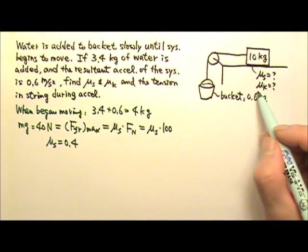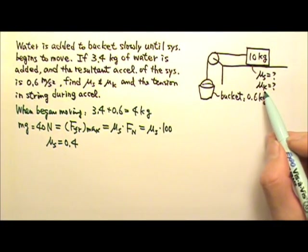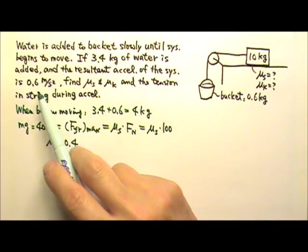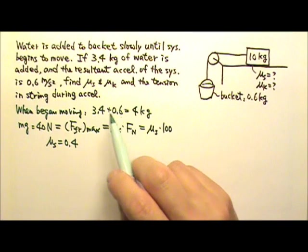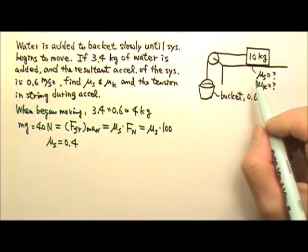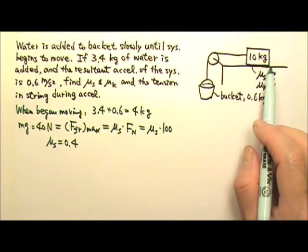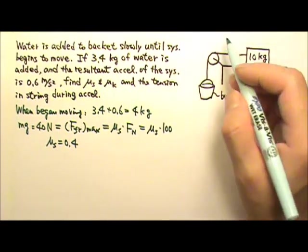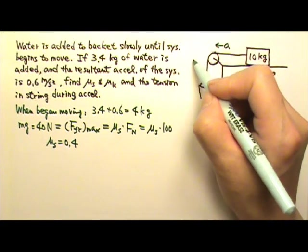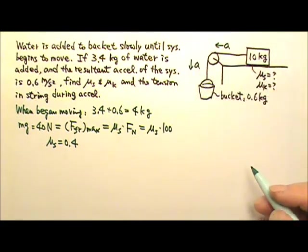Now for the μk, that has to do with the sliding motion. So we'll have to look at the sliding motion part. If we follow the problem solving procedures, first the direction of acceleration. When the system begins to slide, the acceleration goes to the left and down. And then we have to draw the force diagram.